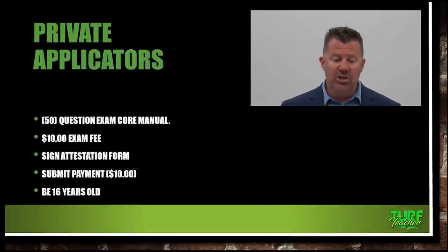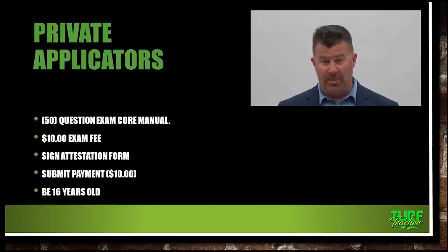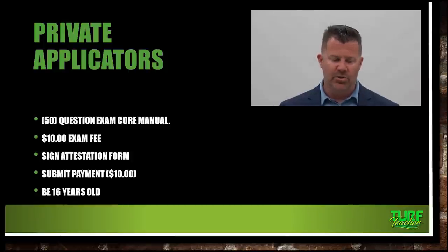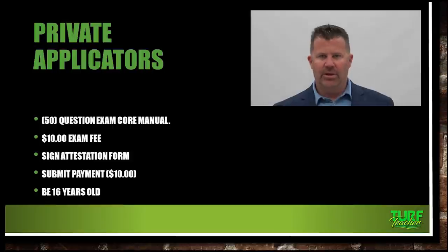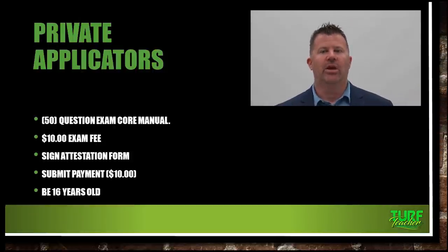Private applicators take a 50-question multiple choice core test. It's going to cost $10. You'll have to sign an attestation form stating that you do produce an agricultural commodity — whether you're a strawberry farmer, a Christmas tree grower, or whatever agricultural commodity you're producing. You must be at least 16 years old. The reason you can get your private certification at 16 is because a lot of farmers use their children or their children's friends on the farm.